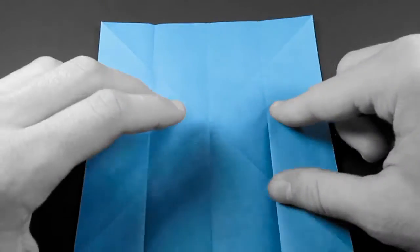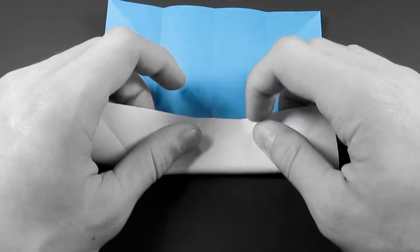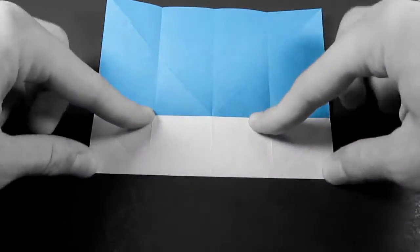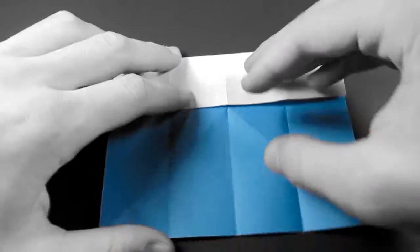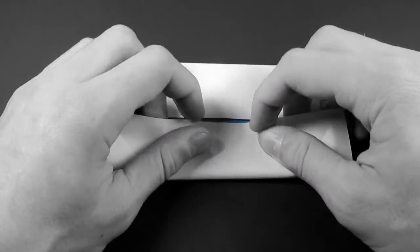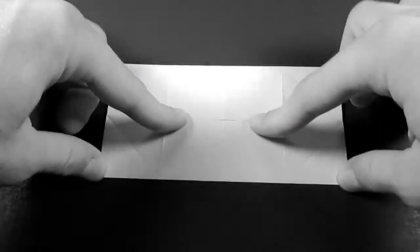And we'll do the same on this side. So fold the bottom edge in. Then rotate and fold the new bottom edge in. And let's unfold and turn over.